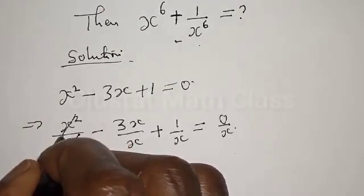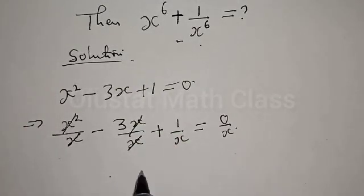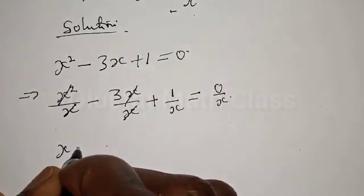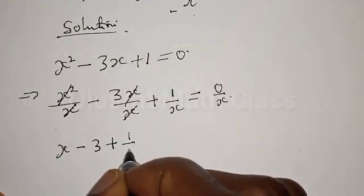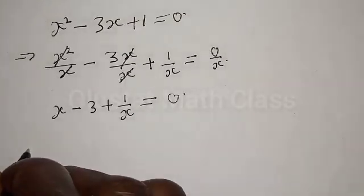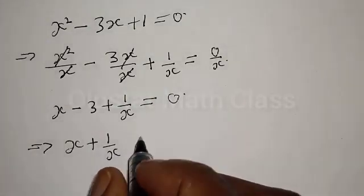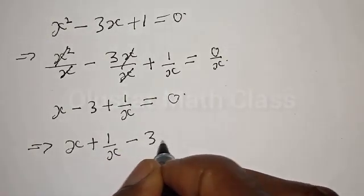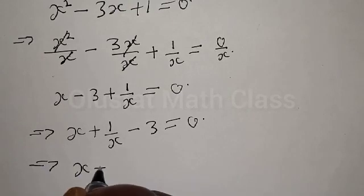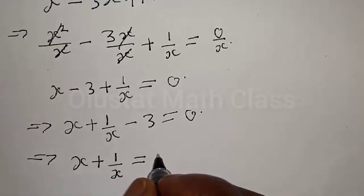The x in x squared over x cancels to give x, and 3x over x cancels to give 3. This gives us x minus 3 plus 1 over x equals 0, which implies x plus 1 over x minus 3 equals 0, and therefore x plus 1 over x equals 3.